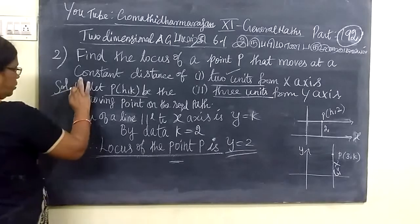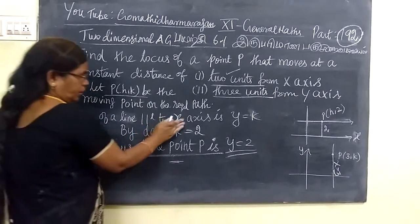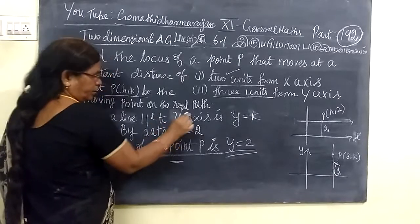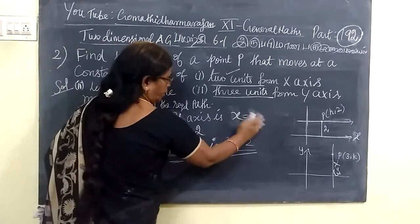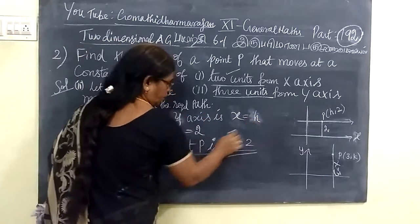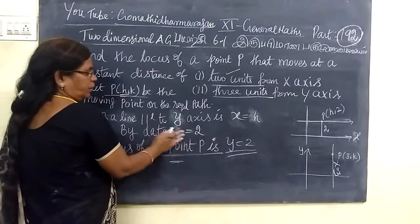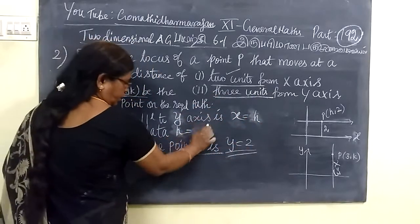This is question number 2. We are going to find the locus with the value in the x-direction. The value is 3 units. We have this value of 3 units.